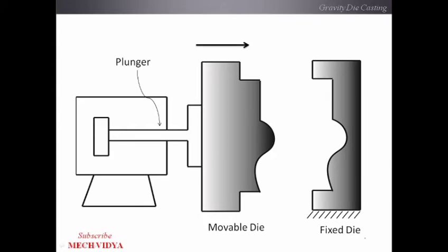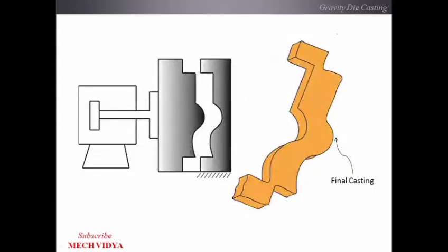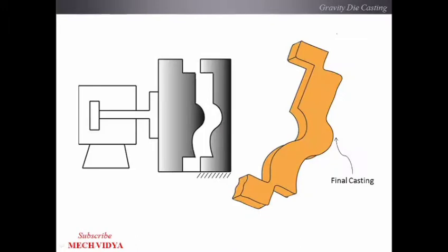Just before pouring the molten metal, this movable die will be forced with the help of the plunger so that the two dies come closer to each other. Once the plunger pushes the movable die, the two dies come closer and there is a small clearance — a gap — in which we pour our molten metal using a ladle. Once we are done pouring, we allow it to solidify, and once solidified, that is the final casting.